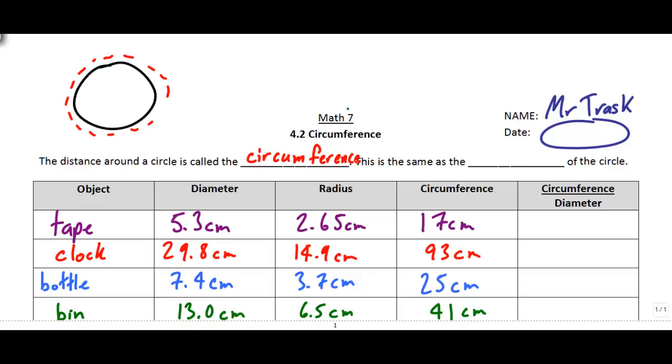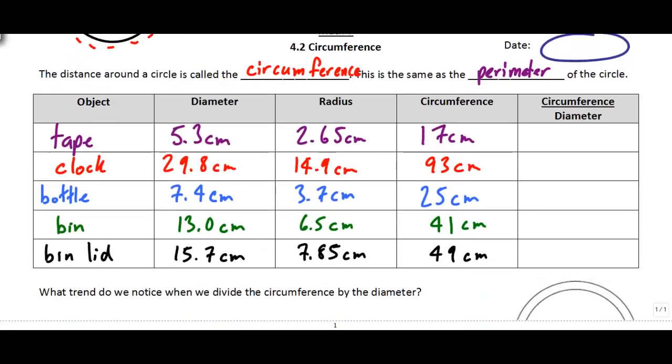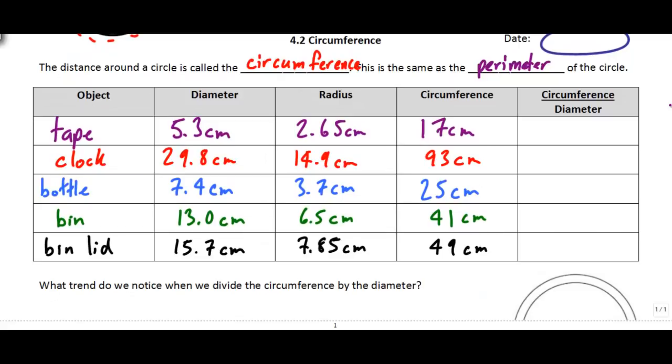And we say this is basically the same as the perimeter of the circle. If you think back to when you learned about rectangles and triangles and squares, we talked about the distance around the outside of a square being the perimeter. In this case for circles we call that the circumference. So in class you had the opportunity to measure a few objects and find their diameter and circumference.